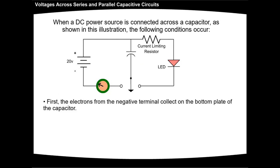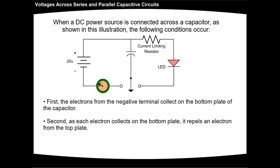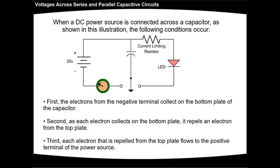First, the electrons from the negative terminal collect on the bottom plate of the capacitor. Second, as each electron collects on the bottom plate, it repels an electron from the top plate. Third, each electron that is repelled from the top plate flows to the positive terminal of the power source.